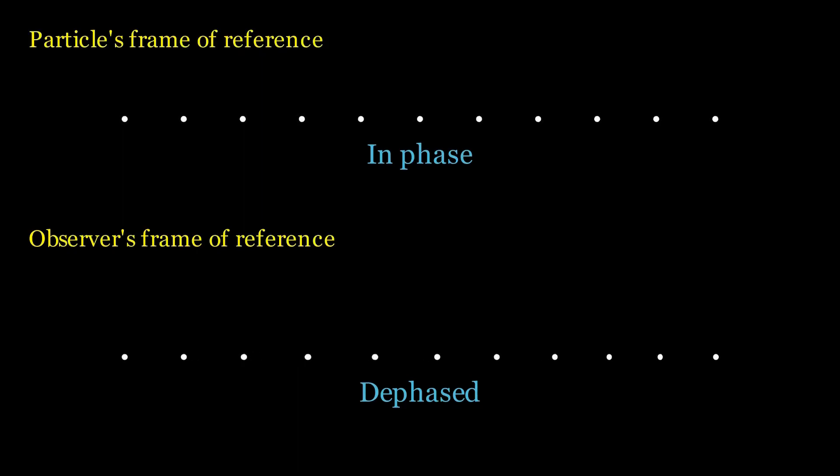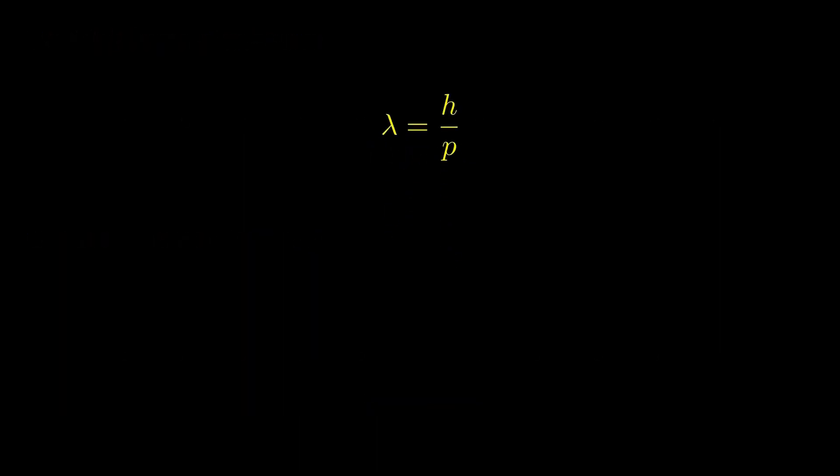The different parts of the phenomenon will no longer be in phase with each other. Some of them will be ahead of others, so we say that there exists a phase decoherence, or dephasing. Hence, a phase wave with a wavelength of h over p occurs in this frame.